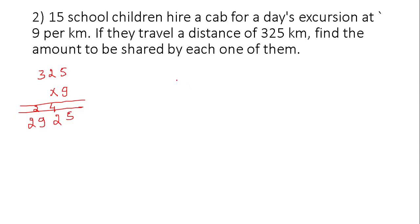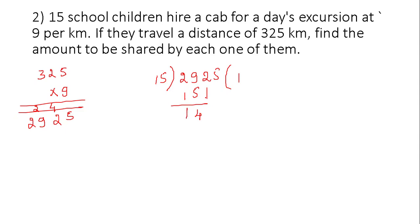They are asking for each student's share: 2925 divided by 15 students. 15 ones are 15. 9 minus 5 is 4, 2 minus 1 is 1. Take this down — 142. 15 nines are 135. Subtract 135 from 142.